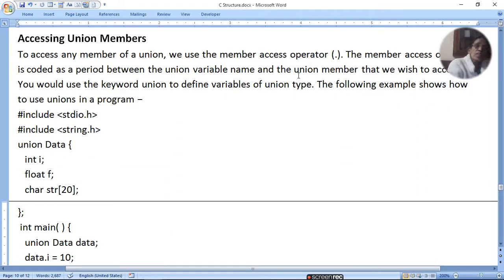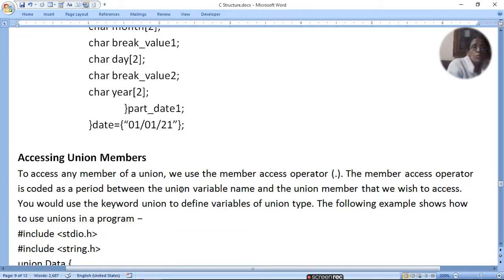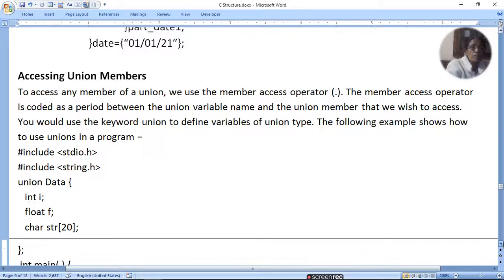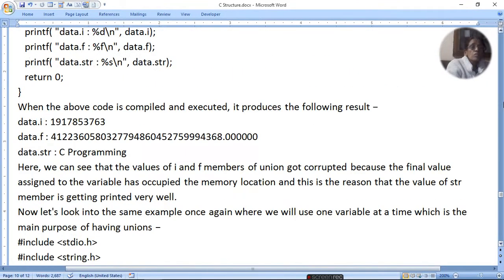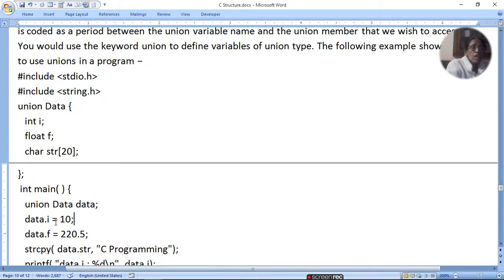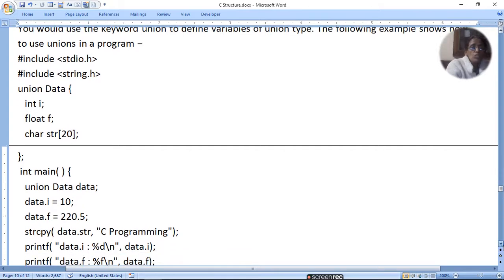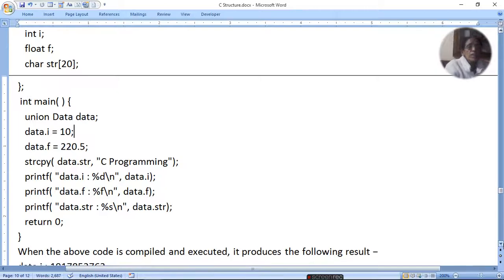To access union members, we need to use the dot operator, just as we used in structures. The dot operator is placed between the union variable and union member. We defined data again and gave its value. Data.i for integer type, data.f for float. And strcpy, when a variable is already defined, to put a value in the string, we use strcpy to copy into data.str. We put C programming.